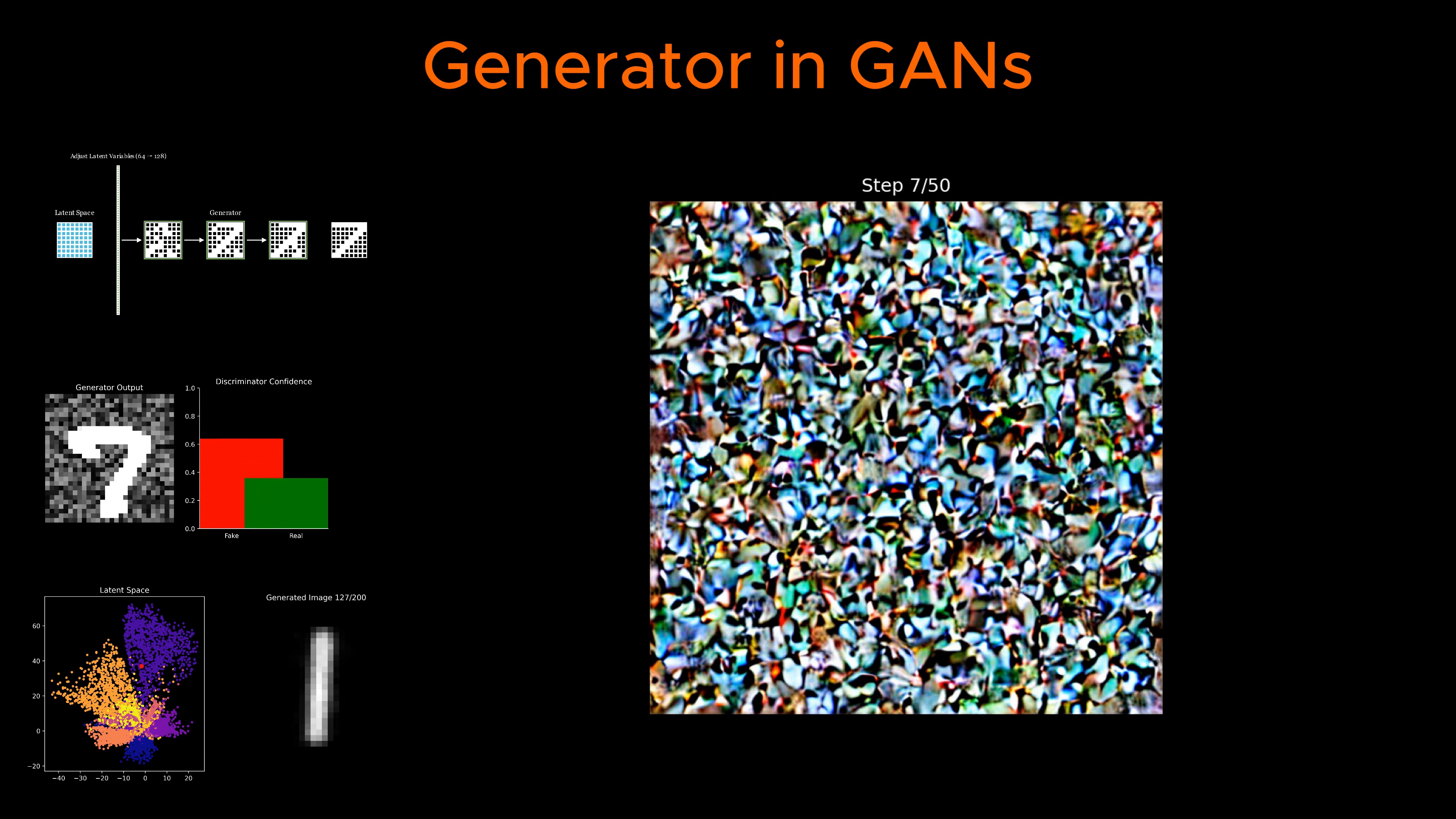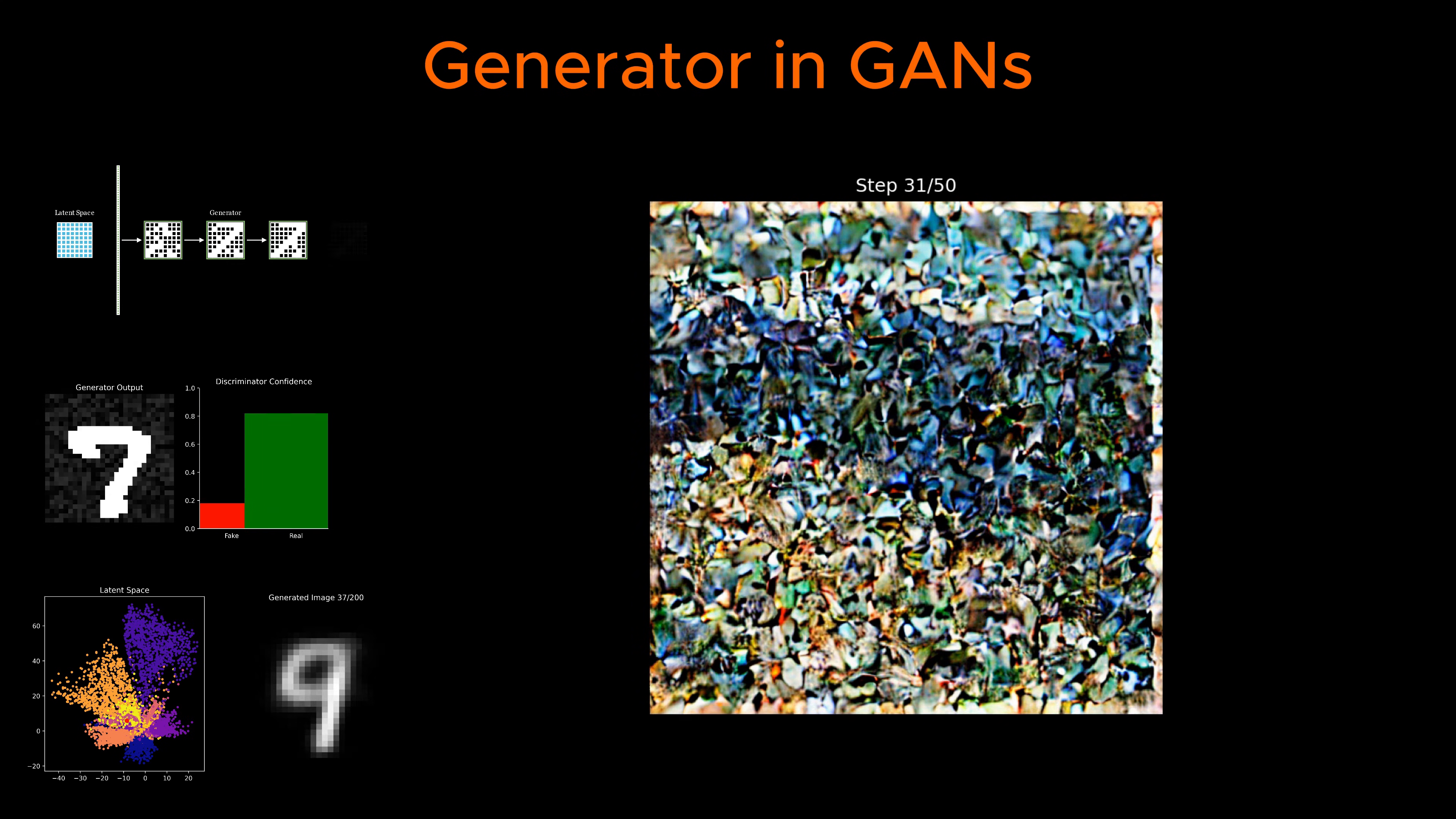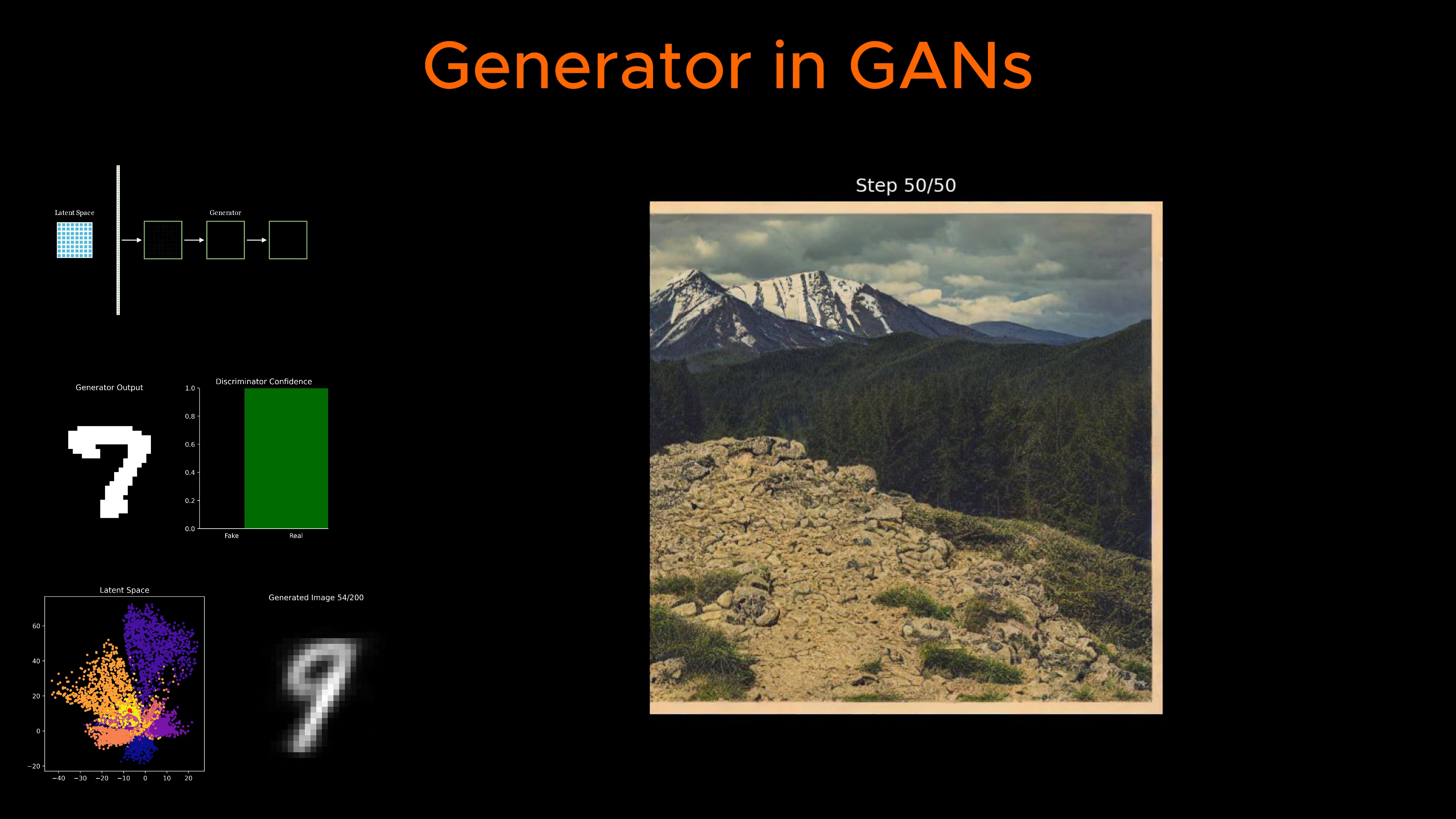Ultimately, after extensive training, the generator becomes capable of producing high-quality images that are nearly indistinguishable from real ones. The latent space thus acts as the creative foundation from which the generator constructs diverse and realistic visual content.